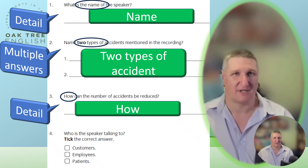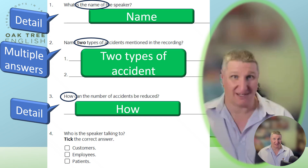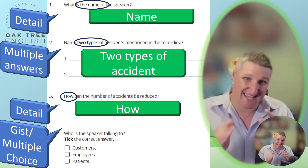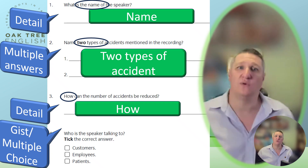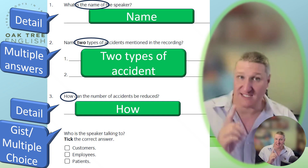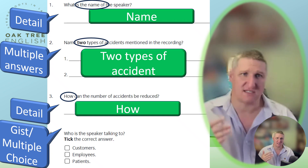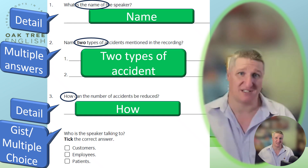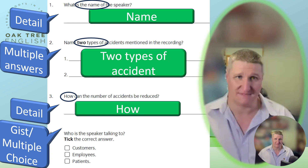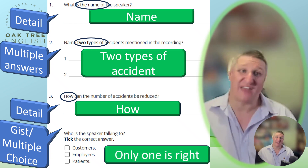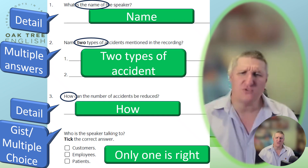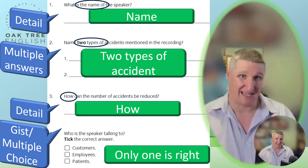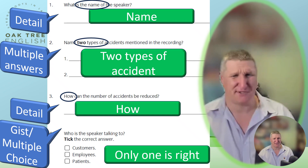Question four, particularly in this example, is the gist question. The gist question could be any of the numbers — in this case, it is number four. So this is the one you will answer in your first listen. Only one of the choices in this multiple choice will be right, although all of them will be mentioned at different times in the recording. Most students find this to be the easiest part of the exam, and if you have understood most of this video, you will do well.